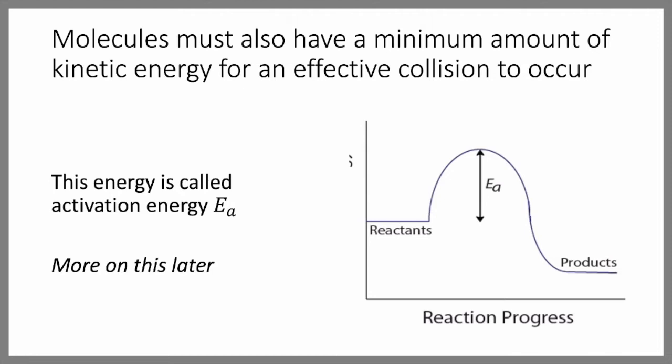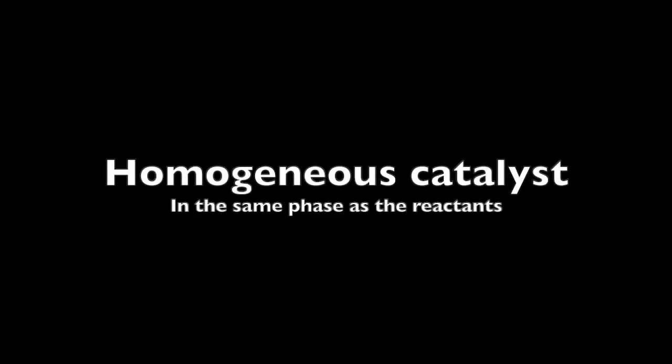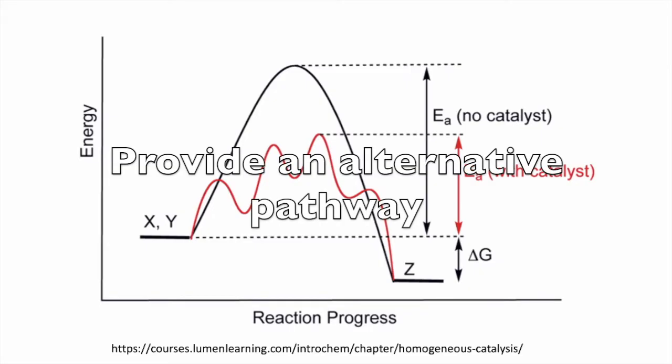The presence of a catalyst can also increase the rate of a reaction. There are two different kinds of catalysts we need to talk about. The first is a homogeneous catalyst. This is a catalyst that's in the same phase as the reactants. A homogeneous catalyst can speed up the reaction by providing an alternative pathway that requires less energy, and we'll talk about this a little bit more later.